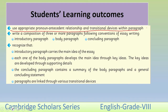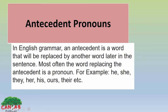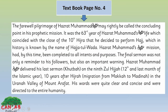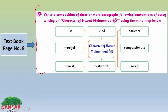Now the first essay SLO of this lesson: use appropriate pronoun-antecedent relationship and transitional devices within a paragraph. In English grammar, an antecedent is a word that will be replaced by another word later in the sentence. Most often, the word replacing the antecedent is a pronoun — for example: he, she, they, her, his, ours, their, etc. If you look at page number four in Unit Number One, you will find many antecedent pronouns in the paragraph — for example: his, he, his.